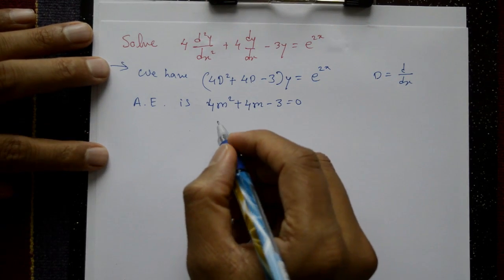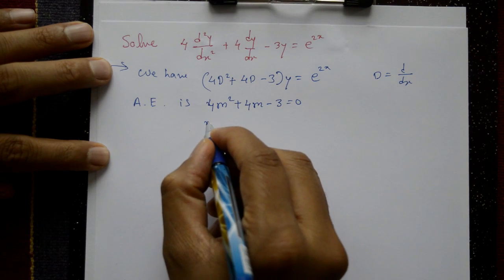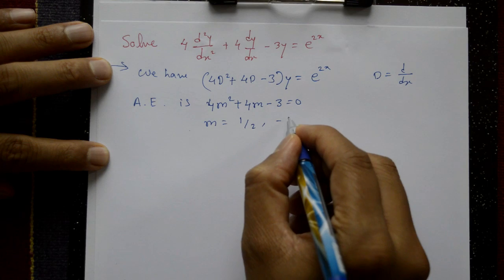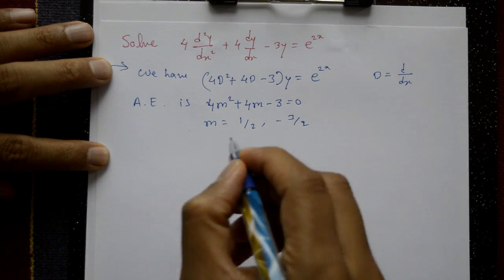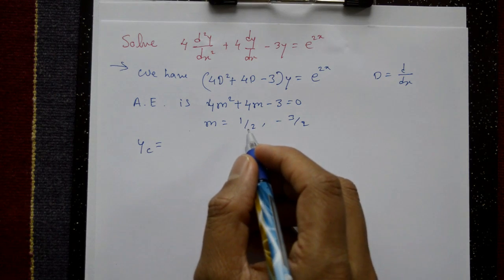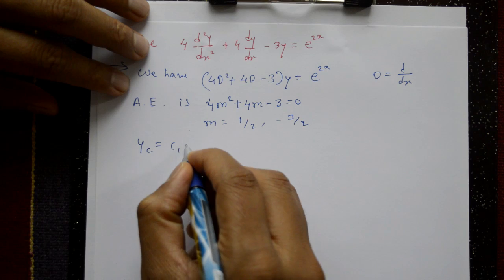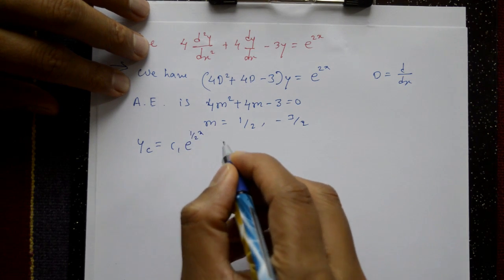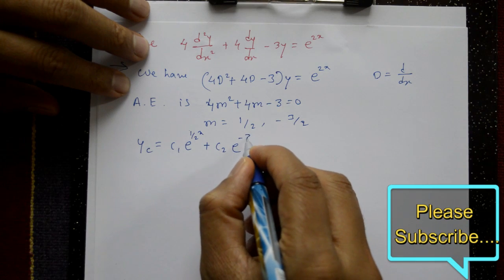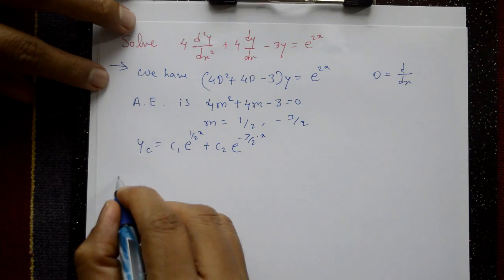Using a calculator or direct factorization, the roots are m₁ = 1/2 and m₂ = -3/2. Since both roots are different, the complementary function is: CF = c₁e^(x/2) + c₂e^(-3x/2).